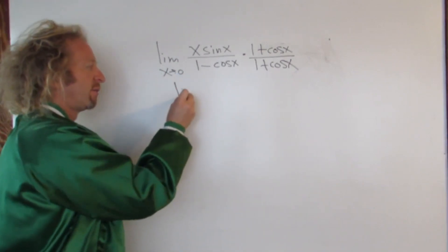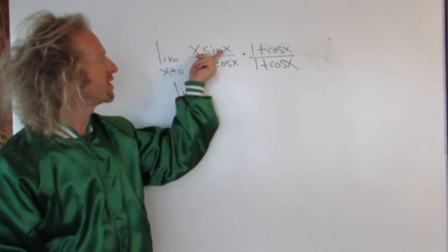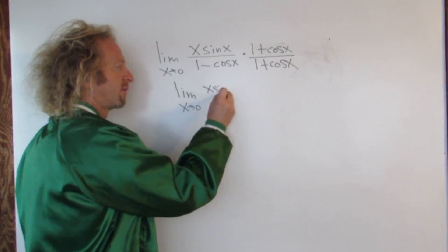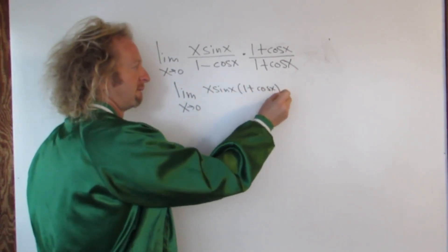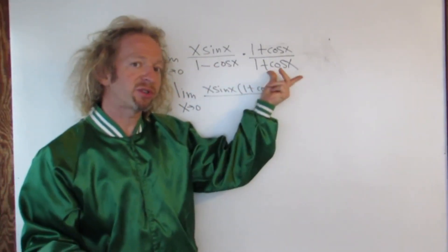We still have the limit as x approaches zero. In the numerator we just have x sine x times 1 plus cosine x, so I'll leave that alone. So we have x sine x, parentheses, 1 plus cosine x.